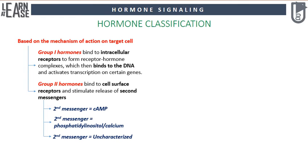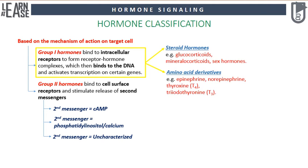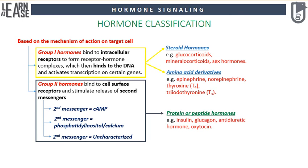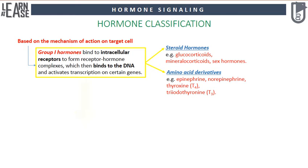Some hormones signal through less characterized pathways. All steroid and amino acid derivative hormones fall in the category of Group 1 hormones and they are lipophilic, whereas protein or peptide hormones are hydrophilic and fall in the category of Group 2 hormones.